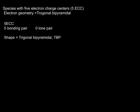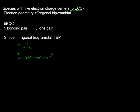Now we are going after species that have expanded octets. What if they have five electron charge centers? An example is PCl5, phosphorus pentachloride. Phosphorus is group 5, so it has five valence electrons, and five chlorines each share one electron, giving ten electrons surrounding phosphorus. Divide by two and you have five pairs of electrons, or five electron charge centers.